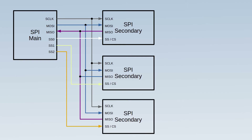This diagram shows how you can connect multiple secondary devices to a single main device. We'll only be using one secondary device in this example, but this shows three. As you can see, the three lines — MOSI, MISO, and SCLK — are shared, and each secondary device uses a separate secondary select or chip select pin.